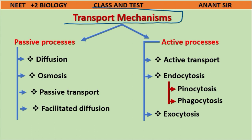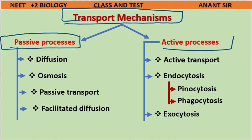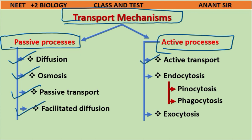Transport mechanisms are of two types: passive processes and active processes. Passive processes include diffusion, osmosis, passive transport, and facilitated diffusion. Active processes include active transport, endocytosis, pinocytosis, phagocytosis, and exocytosis.